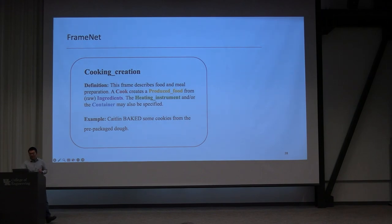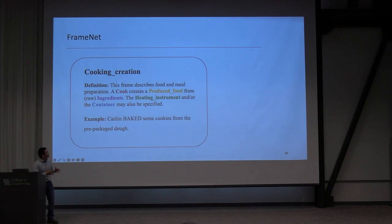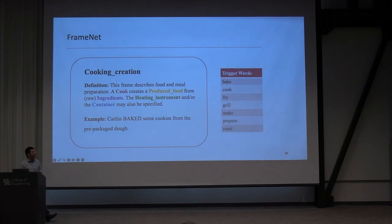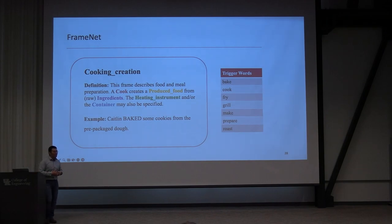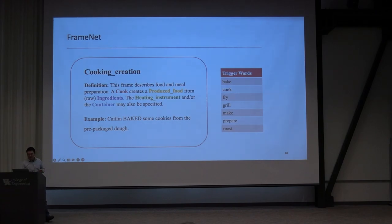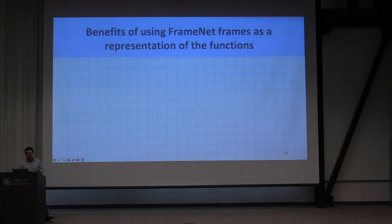For the function of physical objects, our first question is how to represent them. We use a canonical representation called frames from FrameNet — a study of how phrases and words associate with cognitive structures called frames, characterizing a small scene or abstract situation. Research on frame semantics has grown within NLP and cognitive science since the 1970s. In the 1990s, the Berkeley FrameNet project released an online lexical resource. Here's an example: the 'Cooking Creation' frame describes food and meal preparation, where a cook creates produced food from ingredients, with possible instruments or containers. Trigger words like 'baked' in 'Katalin baked some cookies from the pre-packaged dough' activate this frame — Katalin is the cook, cookies are the produced food, and pre-packaged dough is the ingredients.